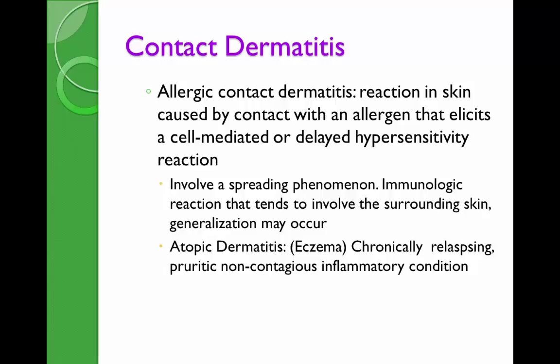If you have rhinosinusitis or asthma as a personal or family history, you could develop atopic dermatitis. It is very common in the pediatric population and has a very distinct pattern of distribution. It is non-contagious and is an inflammatory condition with a relapsing and remitting nature.